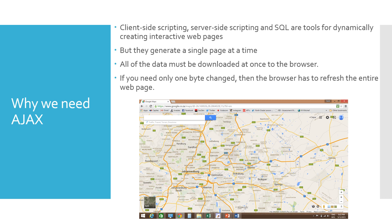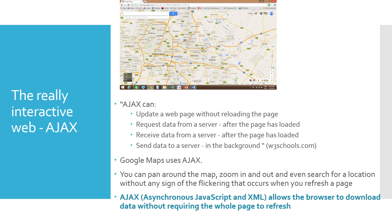There is also something called Ajax. Client-side scripting, server-side scripting, and SQL are tools that dynamically create interactive web pages, but they only generate one whole page at a time — all the data must be downloaded in one go to the browser. If only one small byte changes on the web page, the browser has to refresh the entire page and re-download all the data. For maps, this doesn't work well because as you scroll or zoom, you'd have to re-download the whole map. Ajax can update a web page without reloading the whole page — it requests and receives data from the server after the page has loaded.